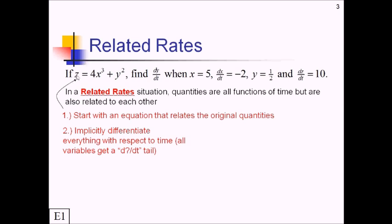Derivative of z, that's going to be 1, but that has a tail of dz over dt. Derivative of 4x to the third, that's going to be 12x squared. But because these are all being differentiated with respect to time, even x now gets its own special tail of dx over dt. Next we deal with the y's. So that's going to be 2y, and then we have a tail of dy over dt.